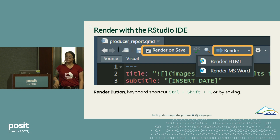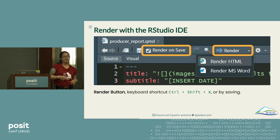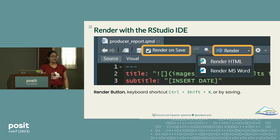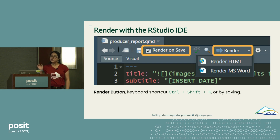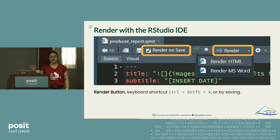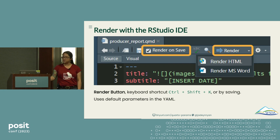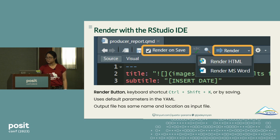How do you render the reports? The fastest way to iterate, edit, and get the look and feel right is using the IDE render button. If you click the little arrow, you can choose between all the different output formats specified in your YAML. If you like keyboard shortcuts, you can use Control+Shift+K. Another nifty feature is the render-on-save option: if checked, every time you save your file it will re-render, and you'll see your HTML preview update. Note that this method uses your default parameters specified in your YAML, and the output file will have the same name and location as the input file.